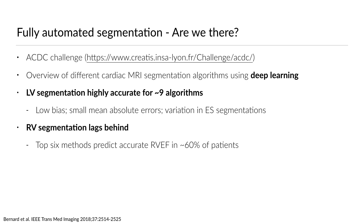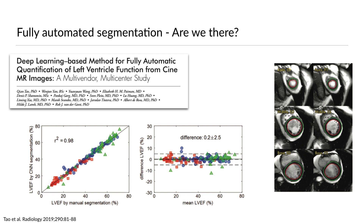There were some variations in end-systolic segmentations, but end-diastolic segmentations were basically very comparable between different algorithms with very high accuracy. However, it is important to note that RV segmentation at this point still lags behind. There were just a few algorithms that performed reasonably well, but none of them approached the accuracy of left ventricular segmentation. So this is an area where machine learning hasn't yet solved the problem to a satisfactory extent.